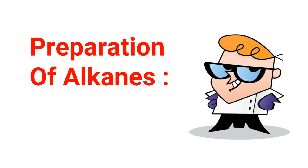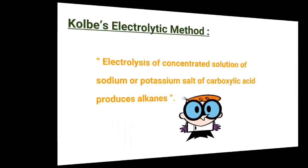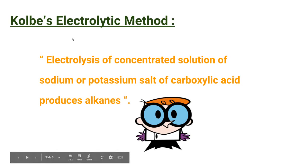In this video you're going to learn to prepare alkanes by Kolbe's electrolysis, named after Herman Kolbe who proposed this method for the first time. Let's start — Kolbe's electrolytic method is a decarboxylative dimerization of two carboxylic acids.